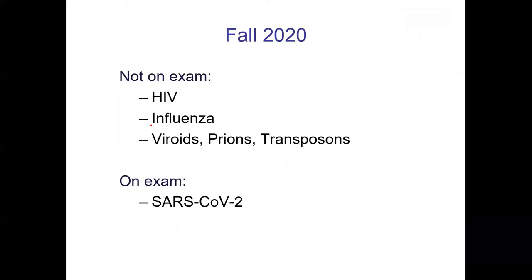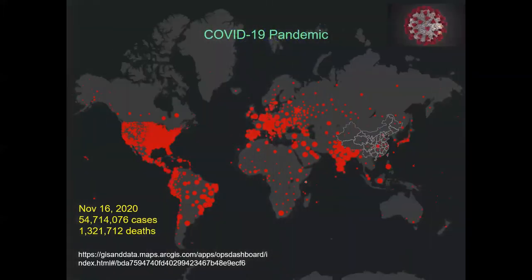In your notes you may notice there's information on HIV - we're not going to cover that this semester. There's a little on influenza - very interesting viruses biologically. We also have notes on viroids, prions, and transposons - I'm going to skip that part too. Instead, we're going to spend that time talking about SARS coronavirus 2 and vaccines for about the next 20 minutes, then we'll talk about the final exam.